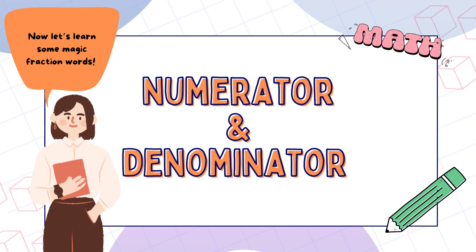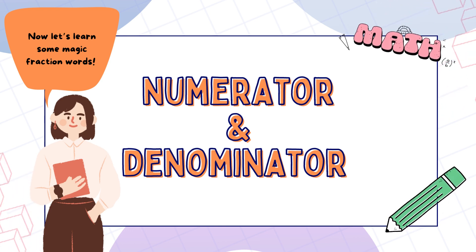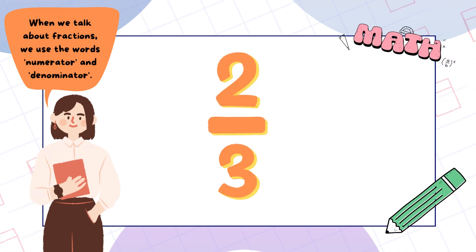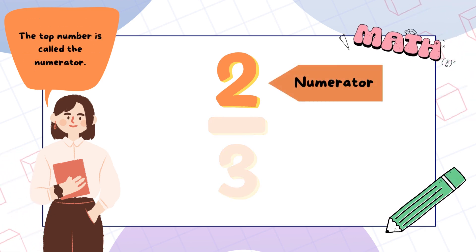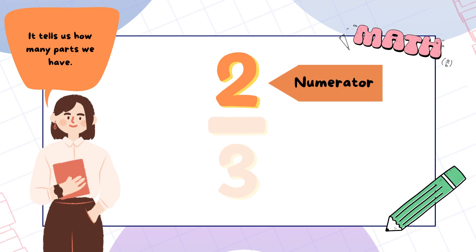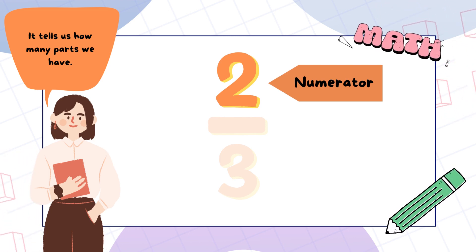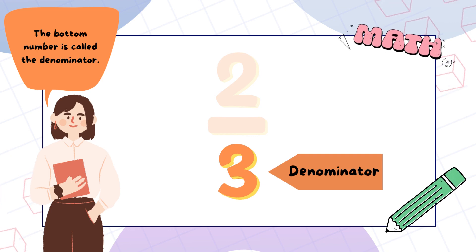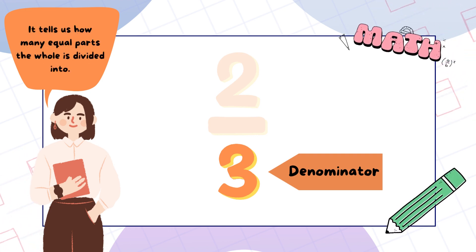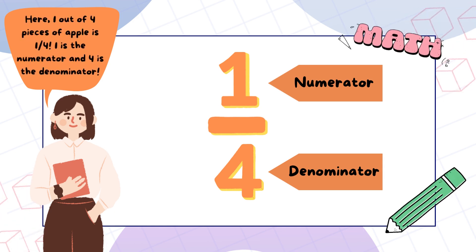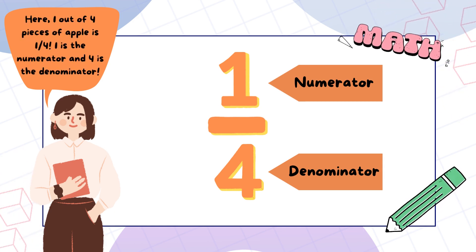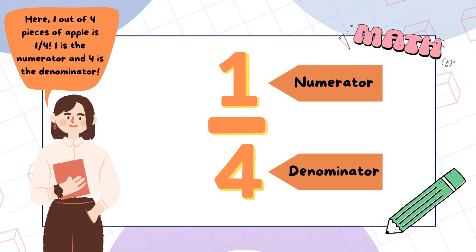Isn't sharing awesome? Now let's learn some magic fraction words: numerator and denominator. When we talk about fractions, we use the words numerator and denominator. The top number is called the numerator — it tells us how many parts we have. The bottom number is called the denominator — it tells us how many equal parts the whole is divided into. For example, one out of four pieces of apple is one quarter: one is the numerator and four is the denominator.